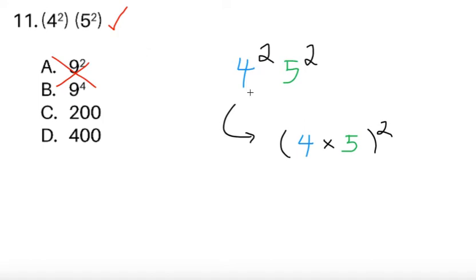So we can use the fact that 4 squared times 5 squared, they both have an exponent of 2. So we can multiply the two bases: 4 times 5 quantity squared. We expect the answer to be a perfect square, and we can obviously see that 400 is a perfect square, while 200 doesn't have an exact square root. So we can conclude that C is wrong.